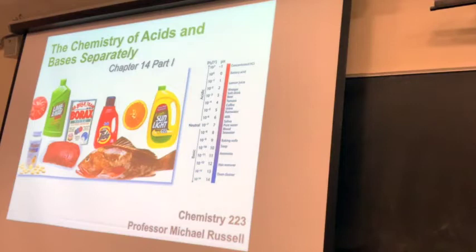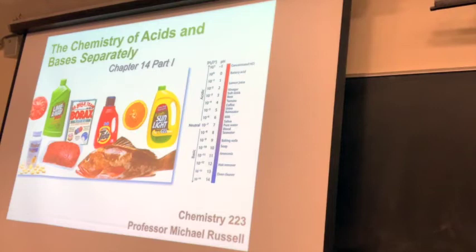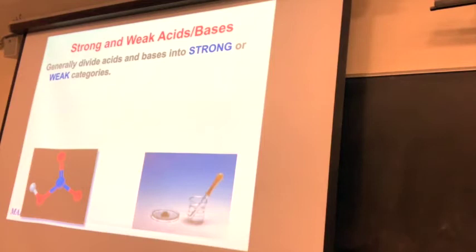I'm splitting this into two sections. This section covers what acids and bases are like by themselves — you have a flask of an acid or a base and we can analyze it. The next section will cover what happens when acids and bases are mixed together. Acids and bases can be split into strong and weak categories. The strong ones are usually more exciting, but the weak ones have some really interesting properties as well.